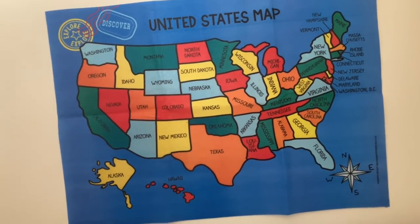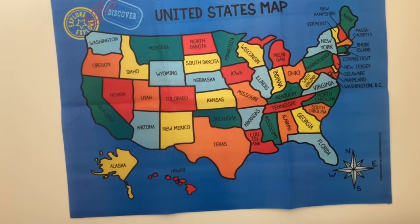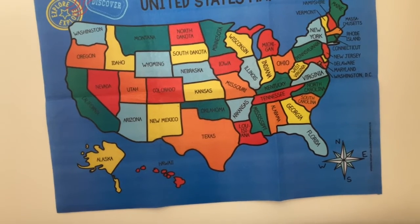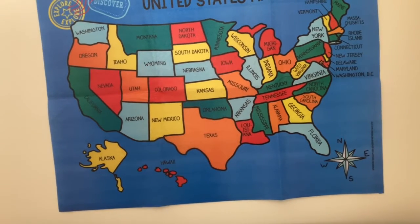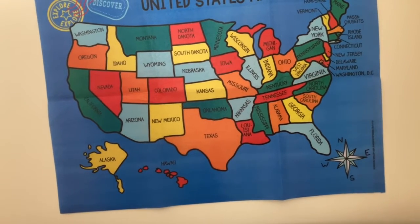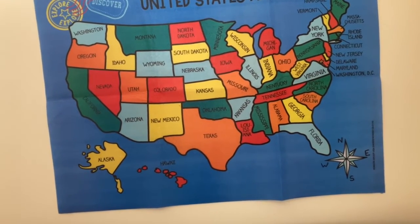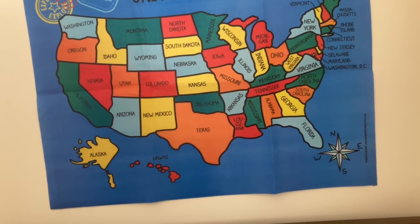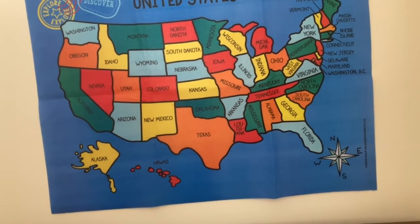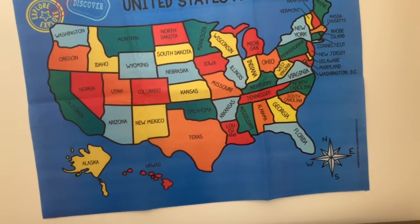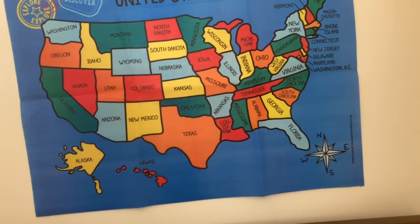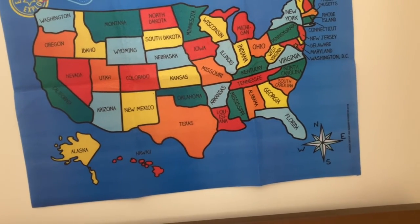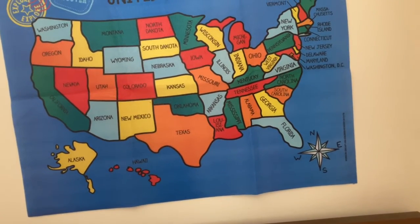So if I decide to choose the orange states first and the children master those, then I can move on to the red states, then the green states, the yellow states, and the light blue states. That could be one method.